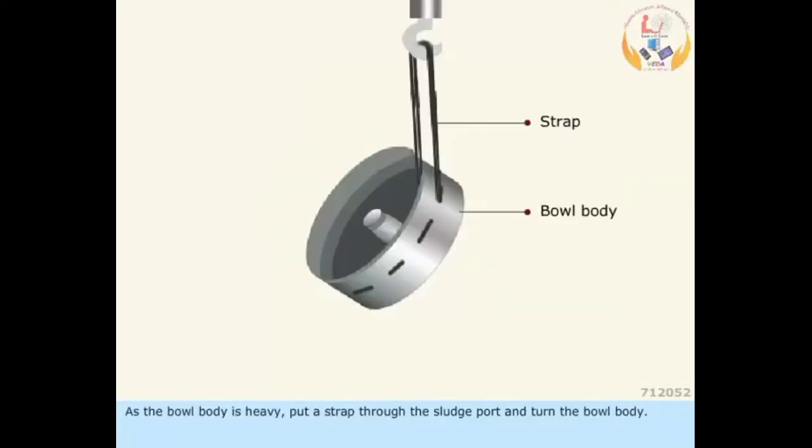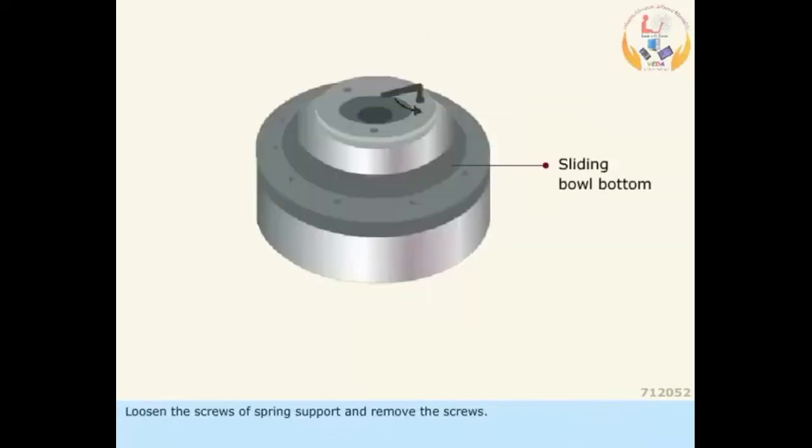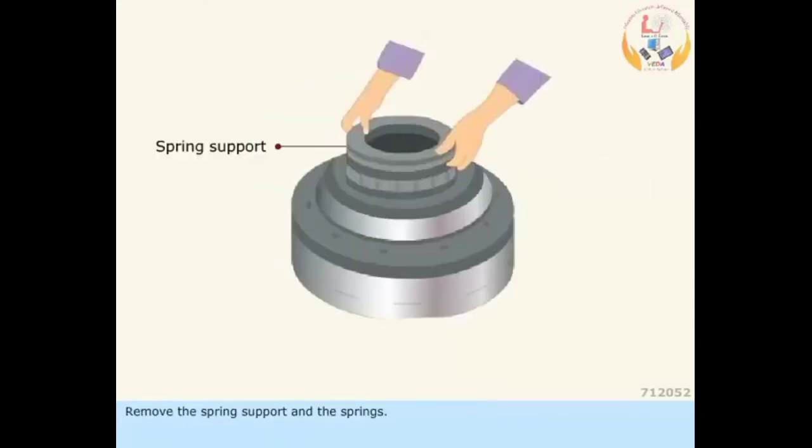As the bowl body is heavy, put a strap through the sludge port and turn the bowl body. Loosen the screws of the spring support and remove the screws. Remove the spring support and the springs.